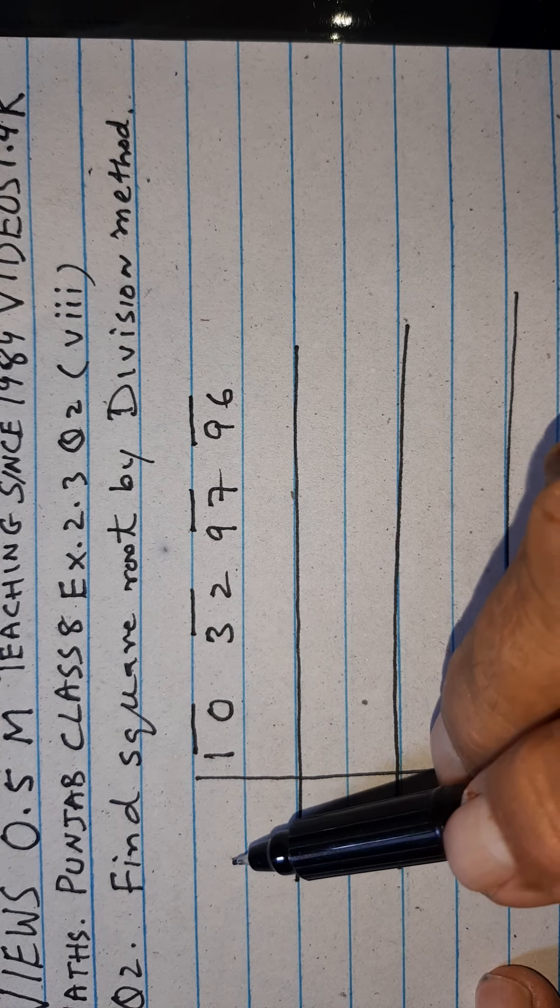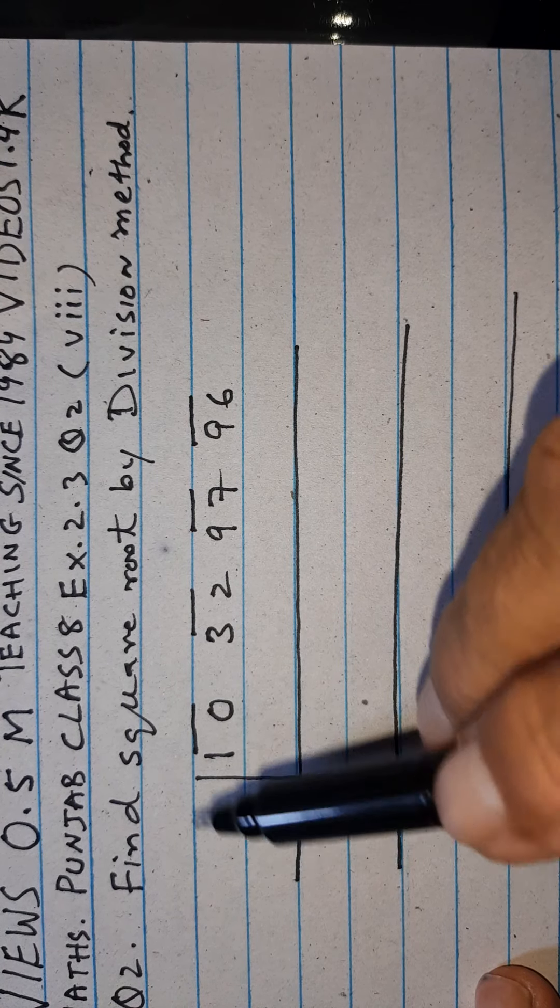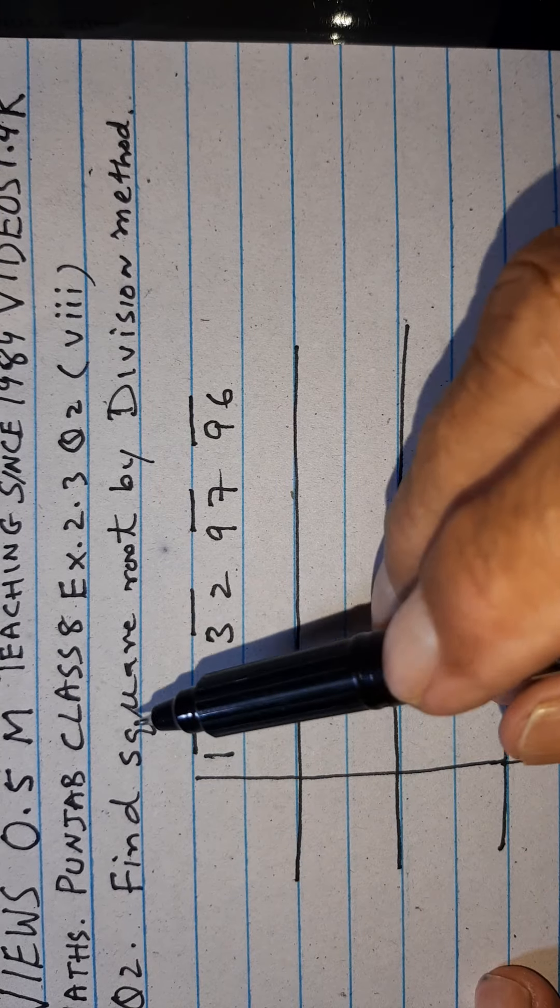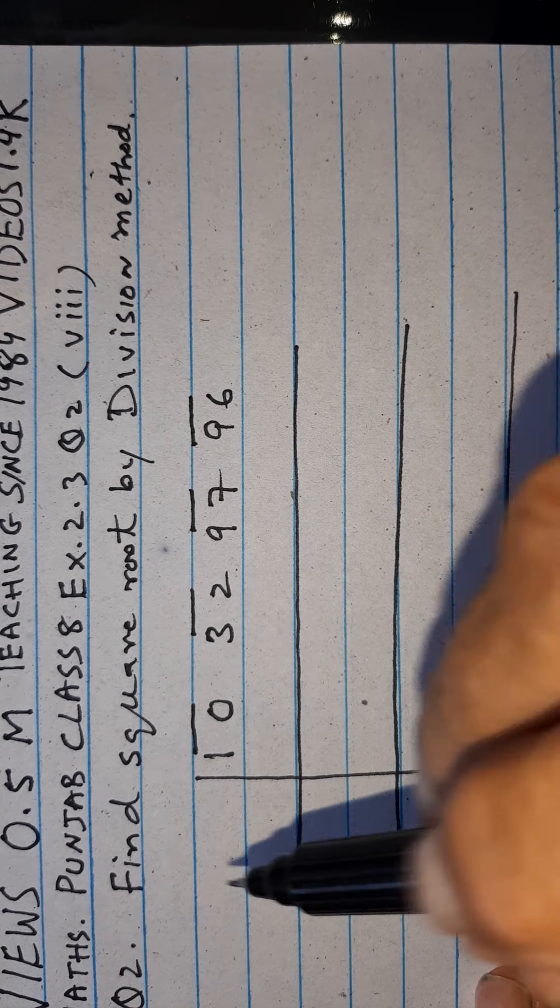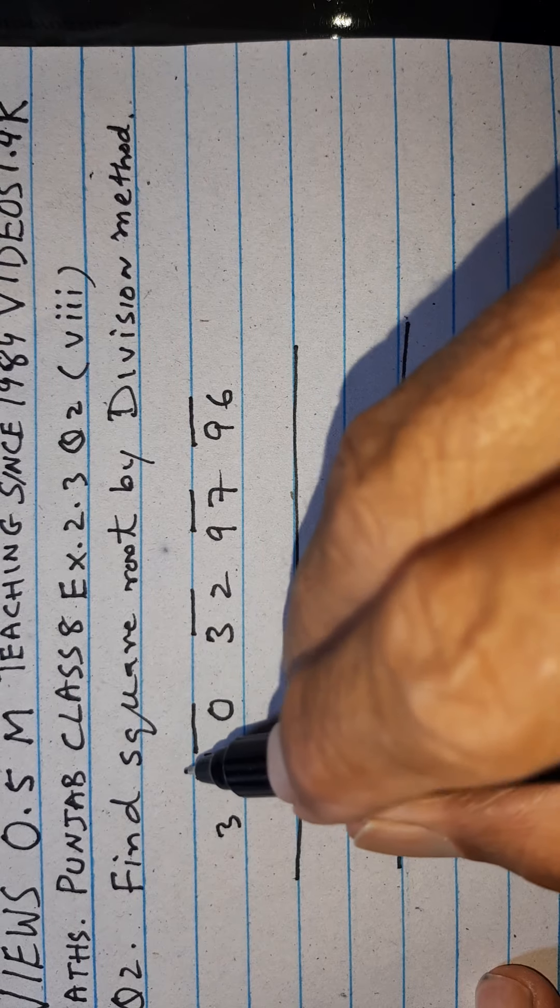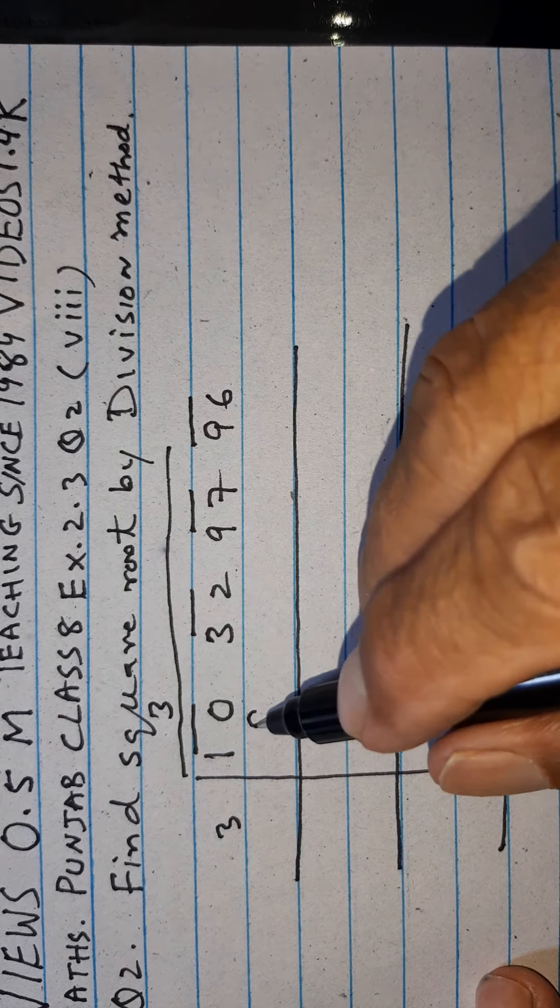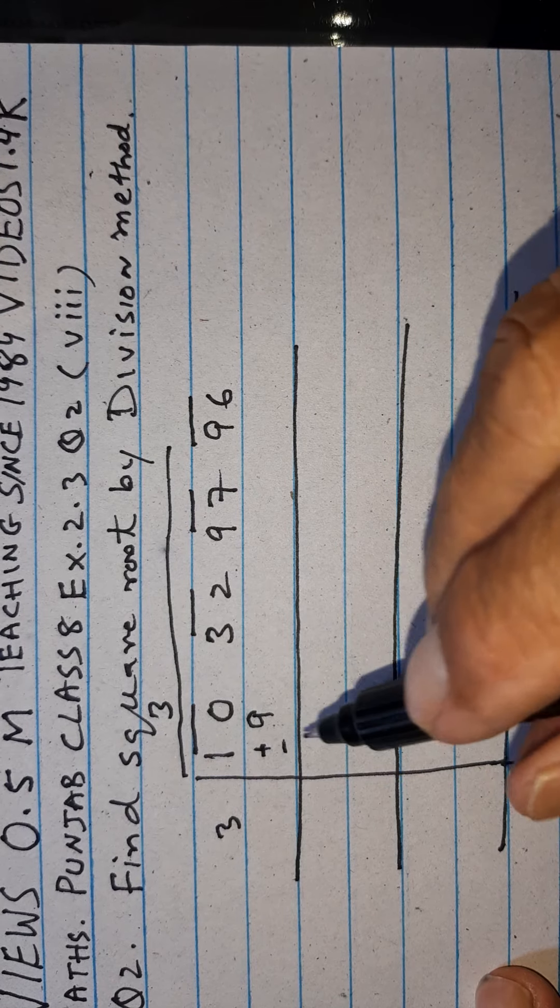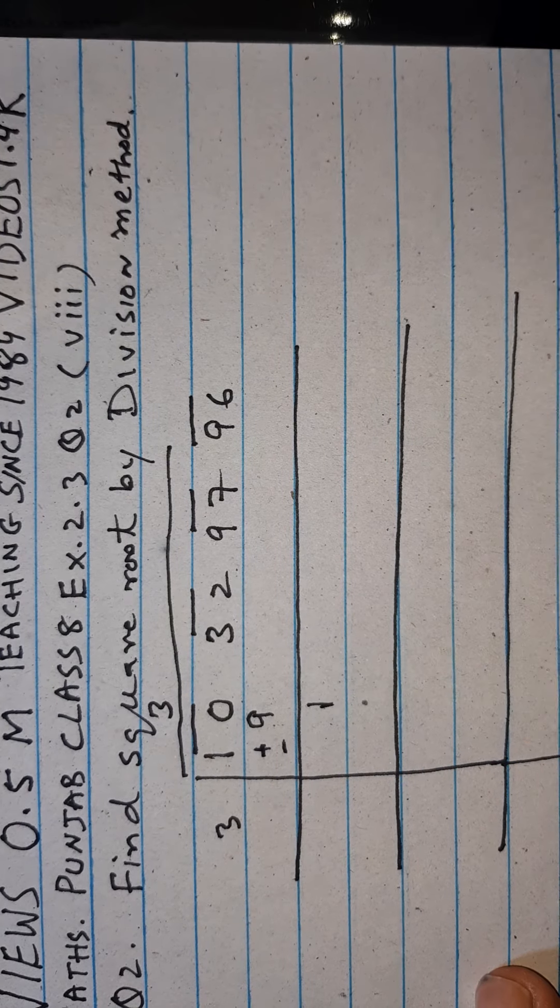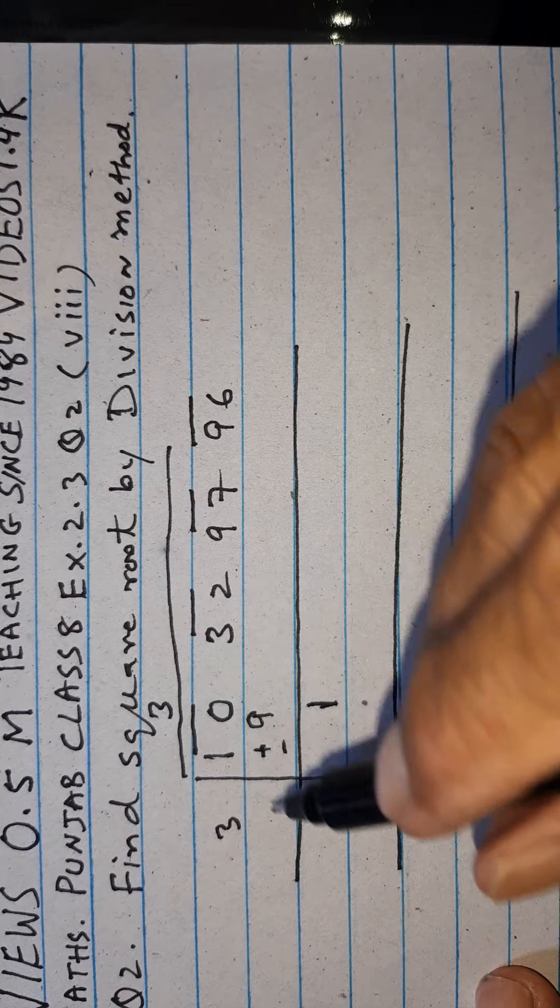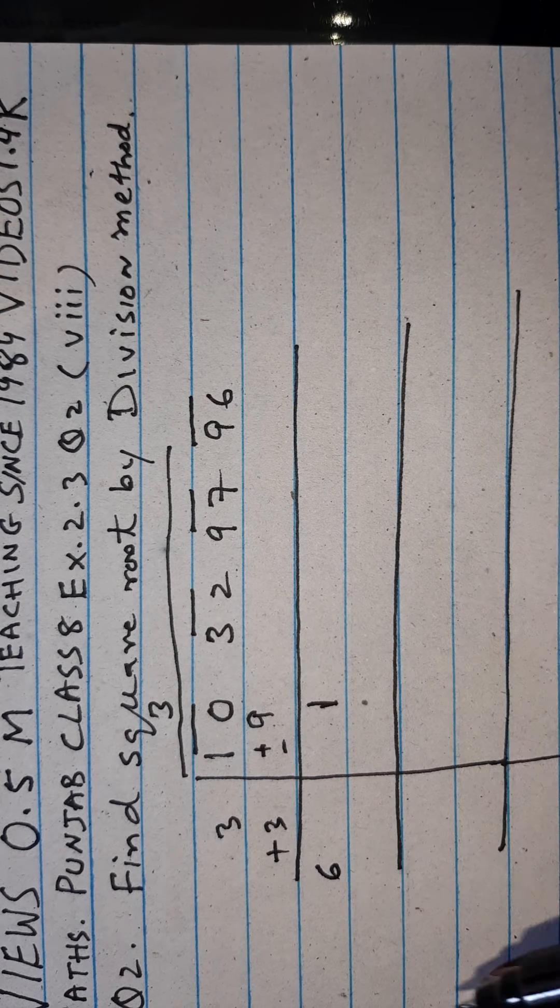We must write one digit here and same digits we must write here. After multiplication should come less than 10, and that is 3. 3 times 3 is 9, cancel. Then here becomes 1, and here the 3 we must add here. This becomes 6.